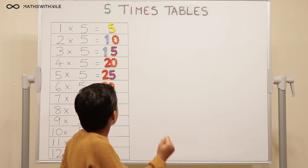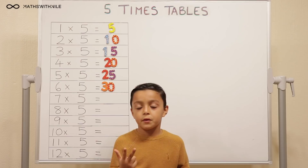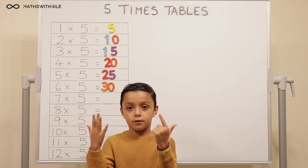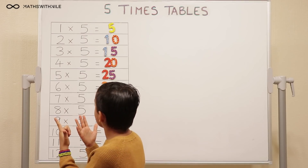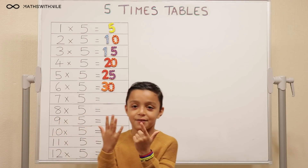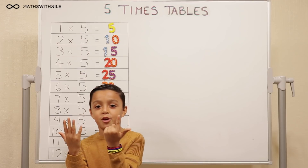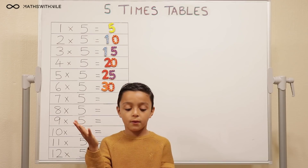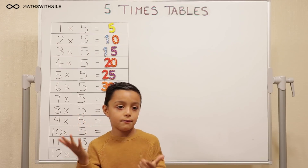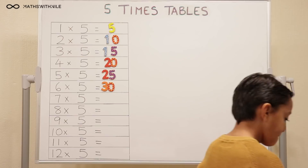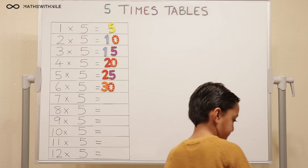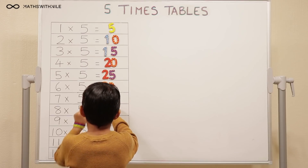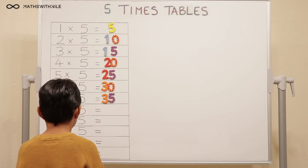Seven times five. Five, ten, fifteen, twenty, twenty-five, thirty, thirty-five, forty. No, you've gone too far. How many fingers do you need? Seven, so thirty-five. Can you do it again for us? Five, ten, fifteen, twenty, twenty-five, thirty-five. Very good. Thirty-five. Make sure you're paying attention to the number of fingers that you're using. Seven times five equals thirty-five.